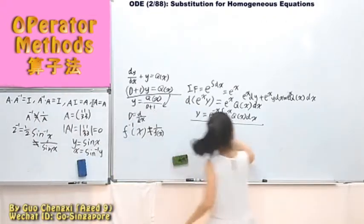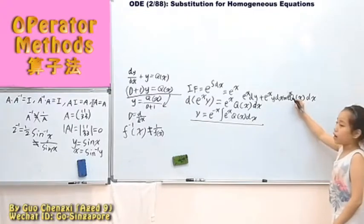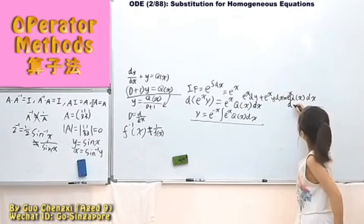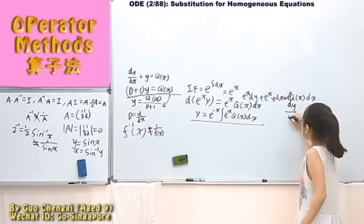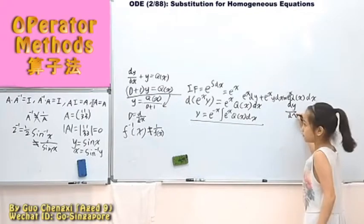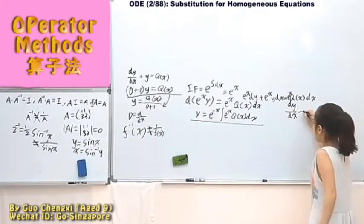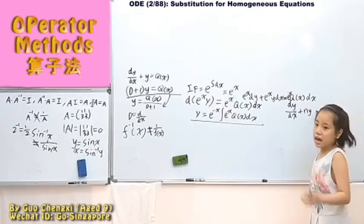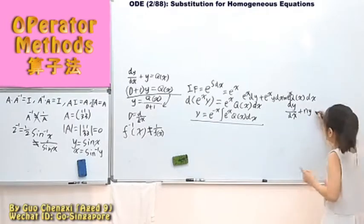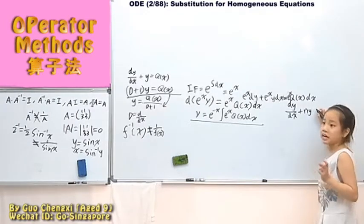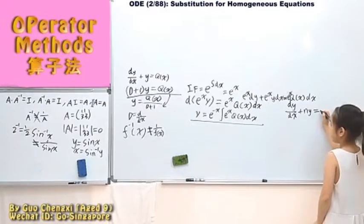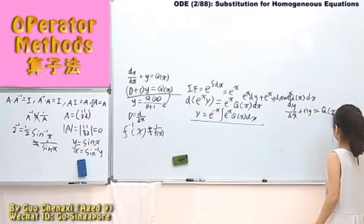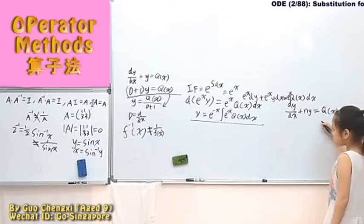What if I say the same for this part — what if I say n times y, where n is a constant? That means it has a constant coefficient.